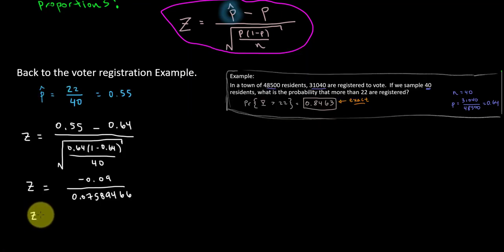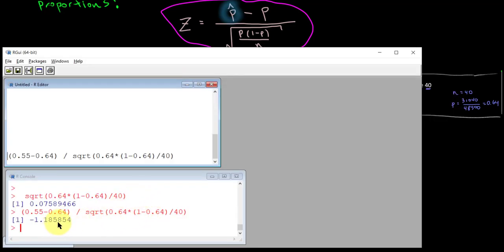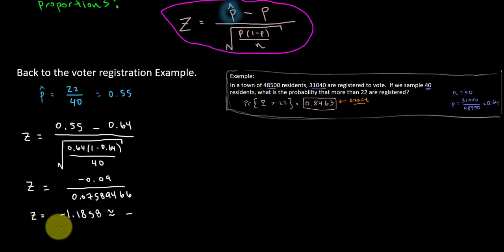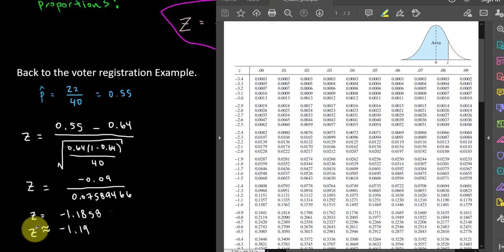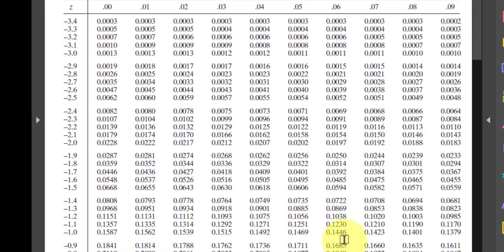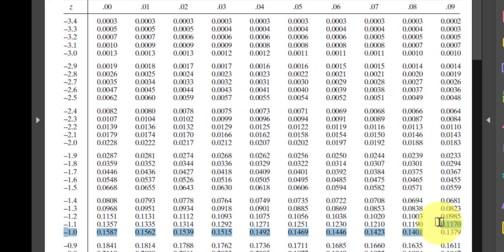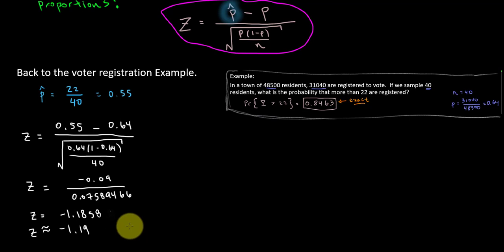If we're going to use the z-table, recall that we need to round to the second decimal place. So I should actually round this to negative 1.19. With my z-table out, I'm on the negative side. Negative 1.19 should get me to the value 0.1170. So this is extracted from the z-table, 0.1170.